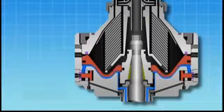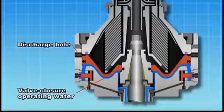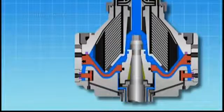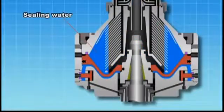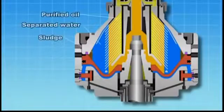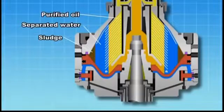Valve closure operating water is supplied again to close the discharge hole. Sealing water is supplied. Fuel oil is supplied. A centrifugal force separates sludge, water and oil.